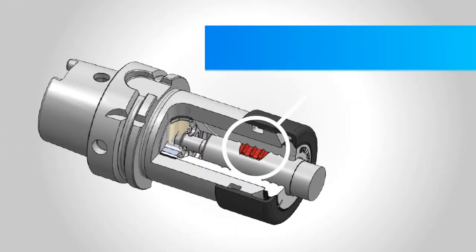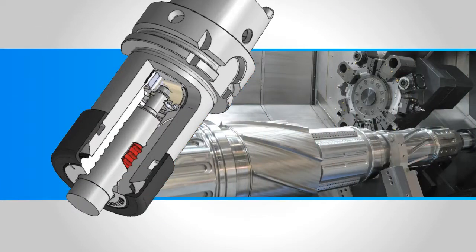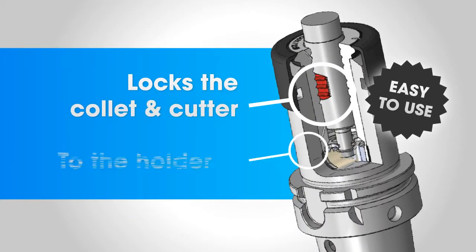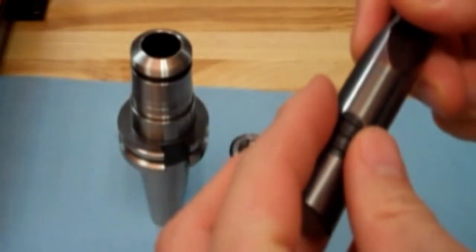How? By eliminating the holder as the weak link in the machining process. Developed for the world's most intensive cutting applications, Secure Grip is an easy-to-use system that locks the collet and cutter into the holder. Unlike other systems, Secure Grip doesn't require expensive, modified end mills. It works with any certified Weldon flat tool.